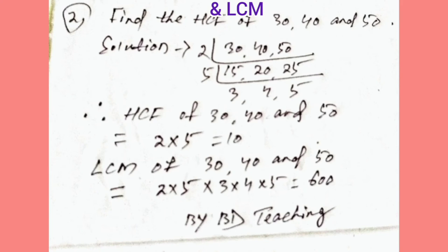Solution: First we will divide 30, 40, 50 by prime number 2, we will get 15, 20, 25. Then we will divide by prime number 5, we will get 3, 4, 5.